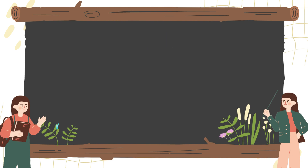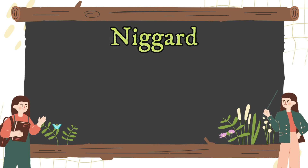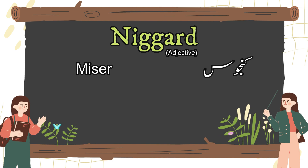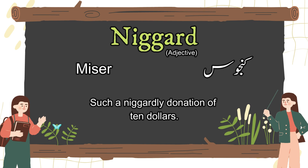The fifth and last word for the day is niggard. This is an adjective. Its English meaning is miserly. If we see its Urdu meaning, that is kanjoos. Here is its sentence: such a niggardly donation of ten dollars.